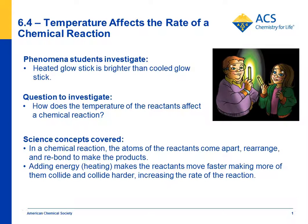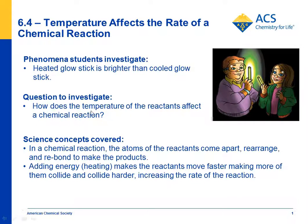In lesson 6.4, students see two glow sticks — one that's been warmed and the other that's been cooled — and the one that's been warmed glows much brighter than the other one. So the question is, why does that happen? Students know that there are reactants inside the glow sticks, so the question is: how does the temperature of the reactants affect the chemical reaction?